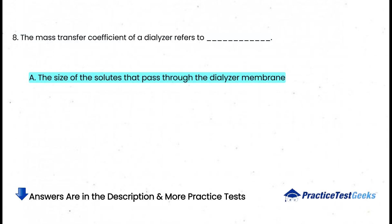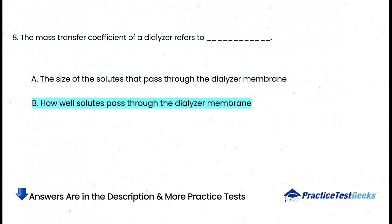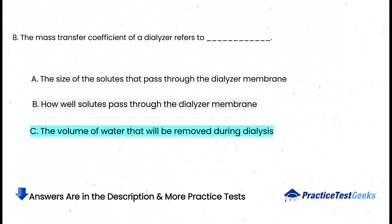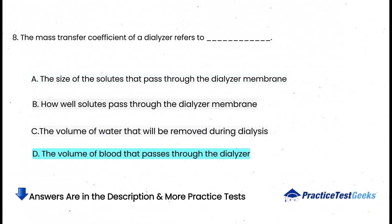The mass transfer coefficient of a dialyzer refers to: a. The size of the solutes that pass through the dialyzer membrane, b. How well solutes pass through the dialyzer membrane, c. The volume of water that will be removed during dialysis, d. The volume of blood that passes through the dialyzer.